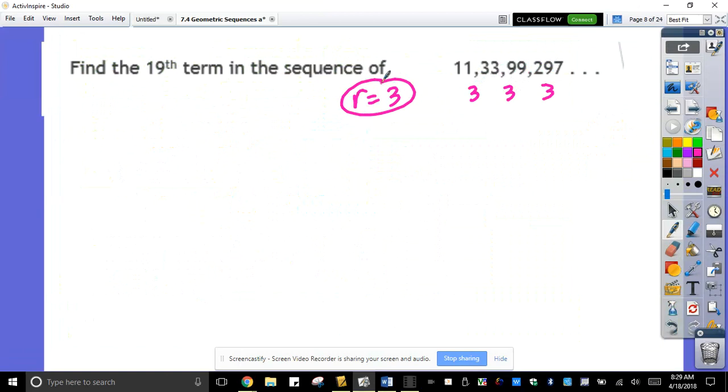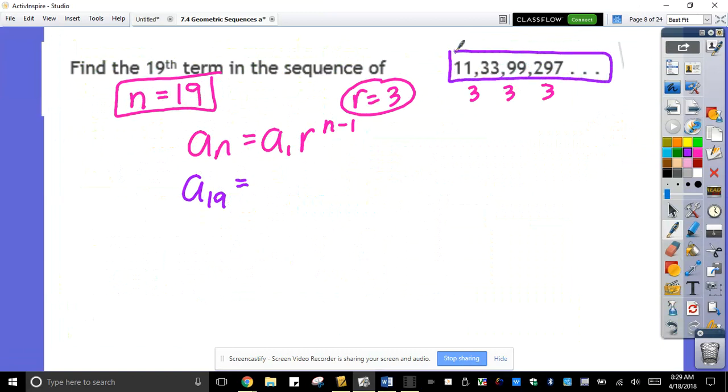Looking at the question here, find the 19th term. I know from there that the n is equal to 19. And the formula for geometric sequence is a sub n is equal to a sub 1, r to the n minus 1. Since n is 19, I'll have a sub 19. a sub 1 is the first term on the sequence, which happened to be 11 right here. r here is 3. n minus 1 is, n is 19, so it will be 18 here because 19 minus 1 is 18. Then the rest is you plug in the calculator.